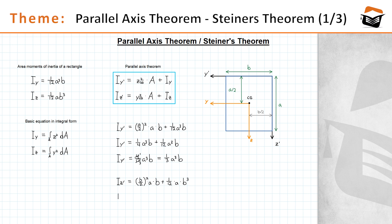Working out the math, you will arrive at one third times a times b cubed. Again, you arrive at the same equation as obtained in the first video when we used the integral form of the area moment of inertia.